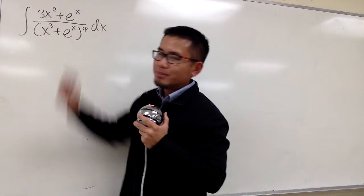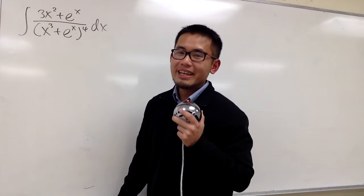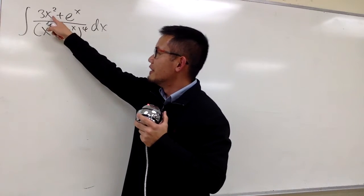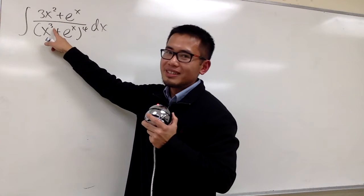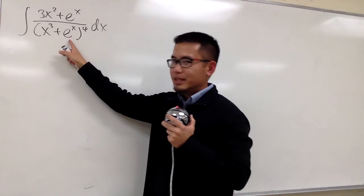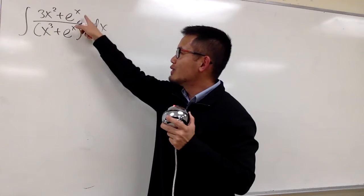This 3x to the second power looks so suspicious, right? It is, in fact, the same as the derivative of x to the third power. And also, e to the x, the derivative of that is also e to the x, right?